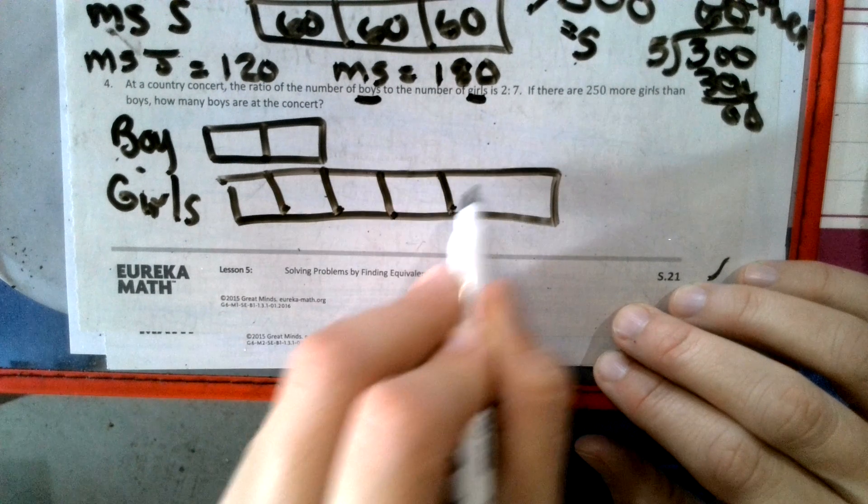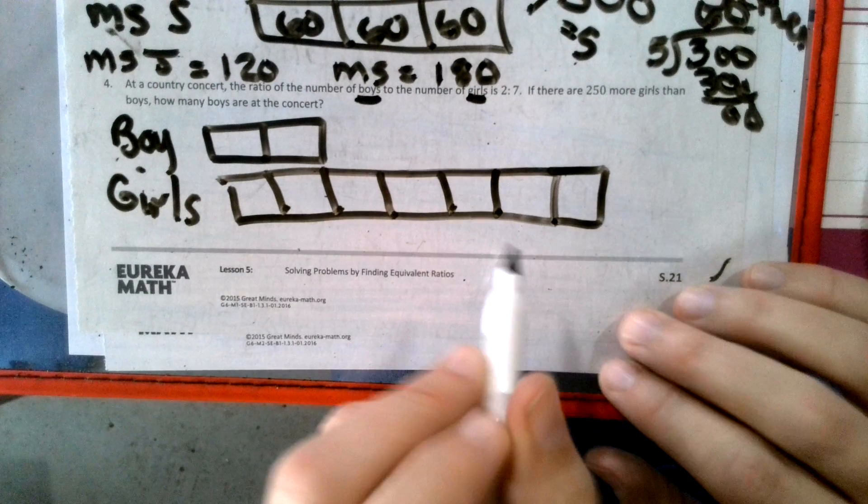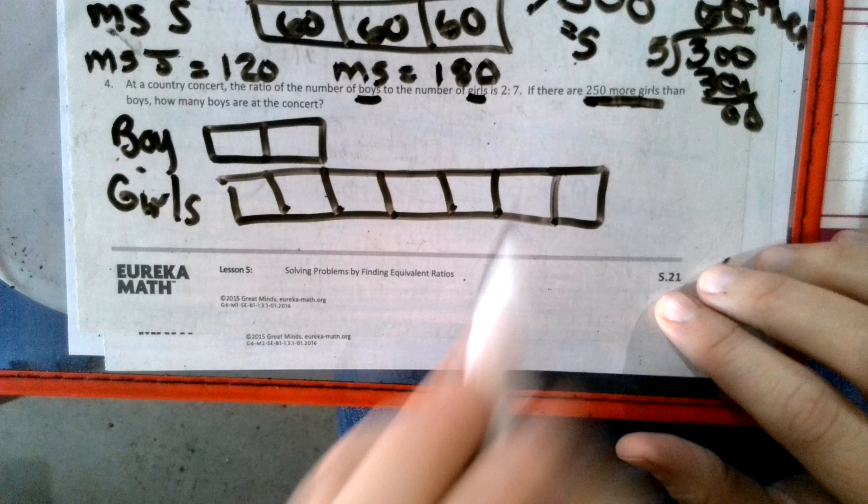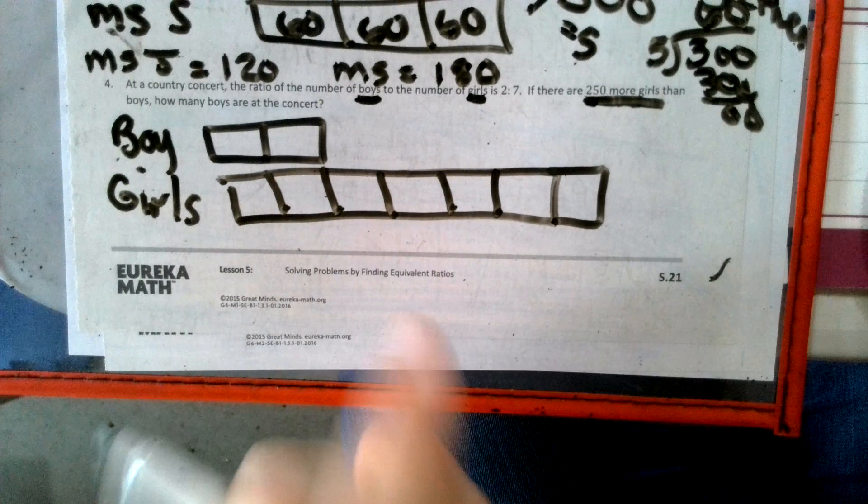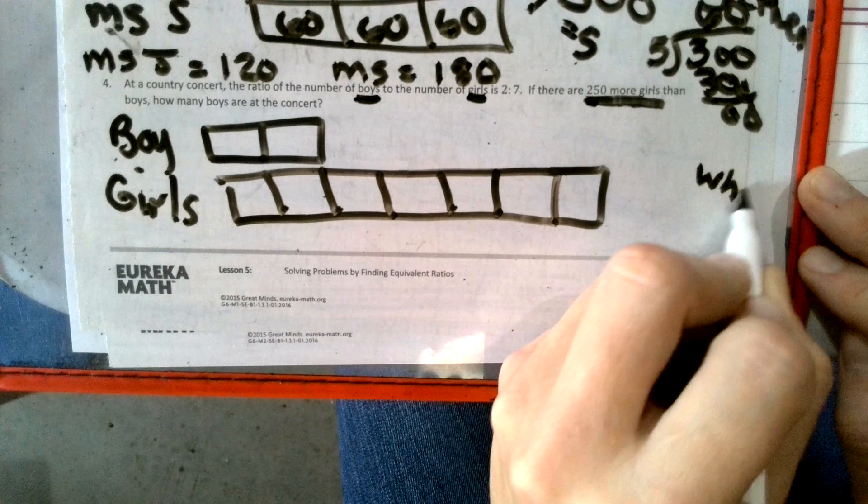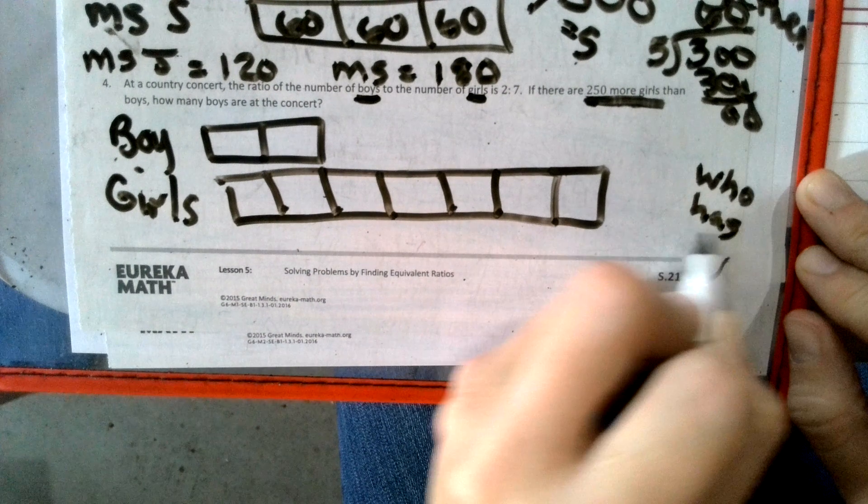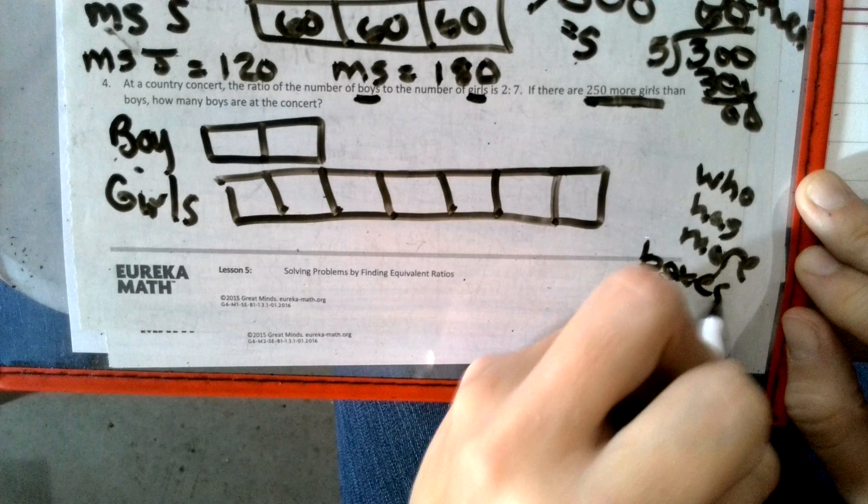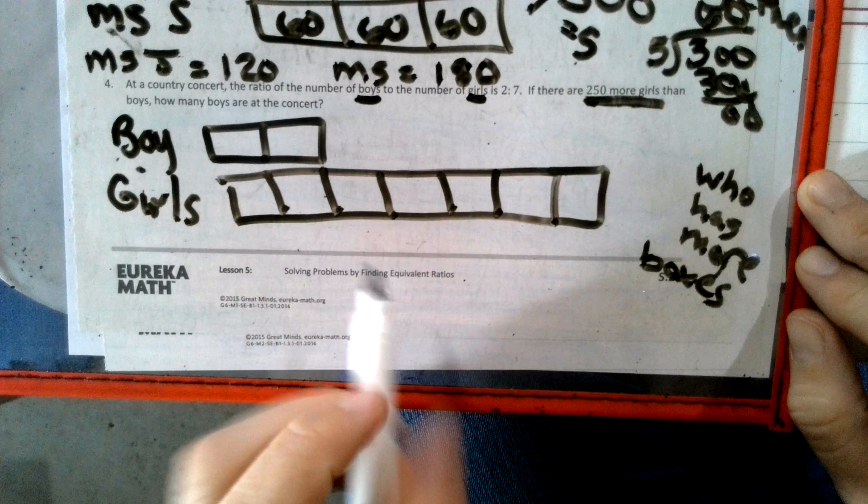If there are 250 more girls, more, who's got more boxes? Remember that. Who has more boxes? The girls. How many more boxes? There's a matching. That's a matching.